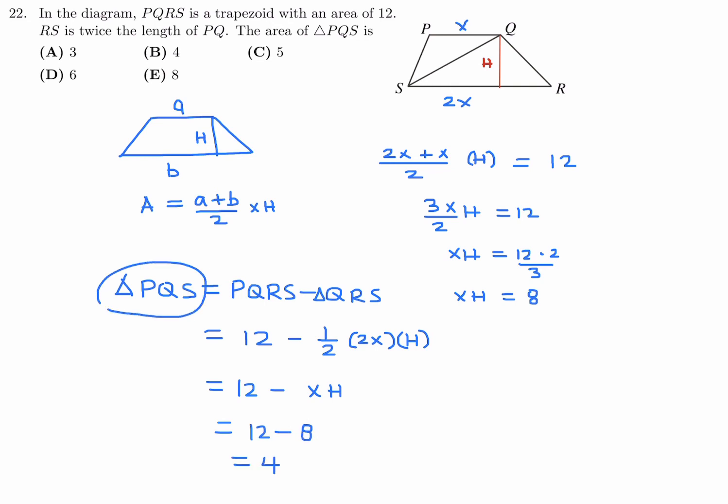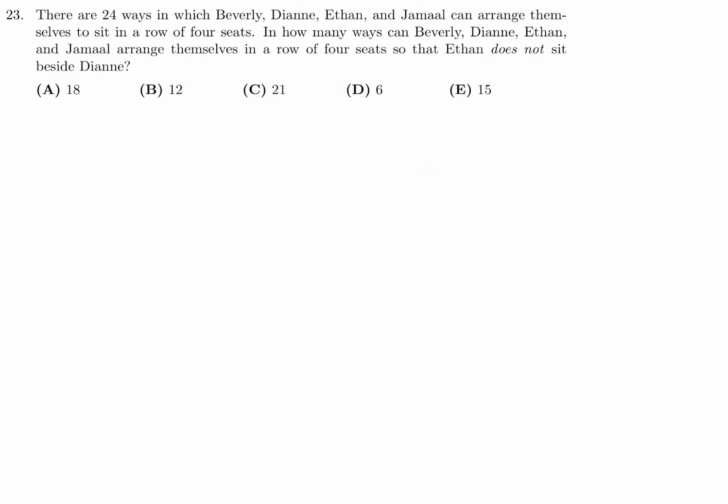So triangle PQS has an area of 4. So number 22, the answer is B. There are 24 ways in which Beverly, Diane, Ethan, and Jamal can arrange themselves to sit in a row of 4 seats. In how many ways can Beverly, Diane, Ethan, and Jamal arrange themselves in a row of 4 seats so that Ethan does not sit beside Diane?